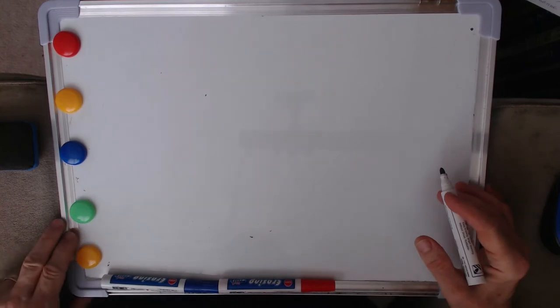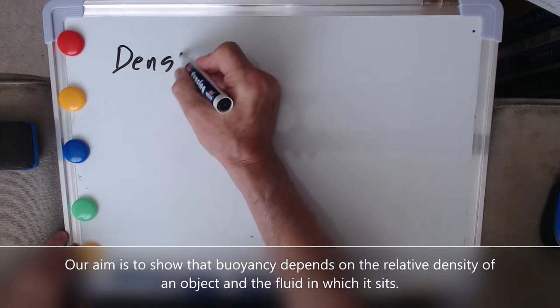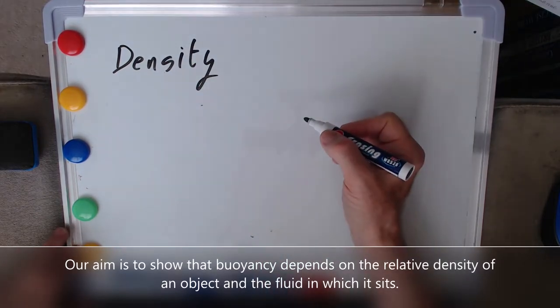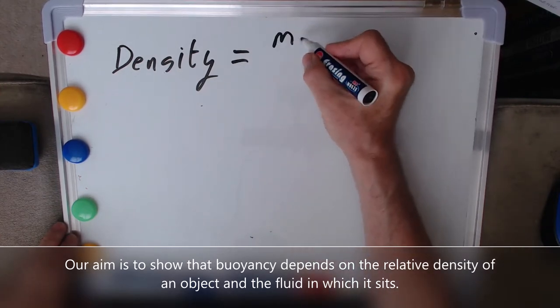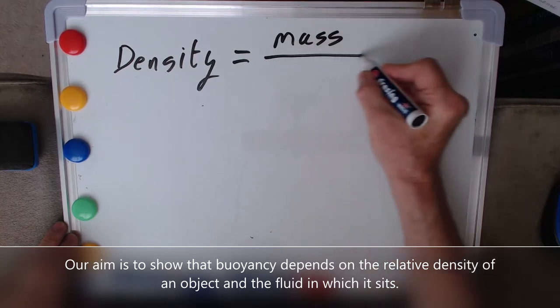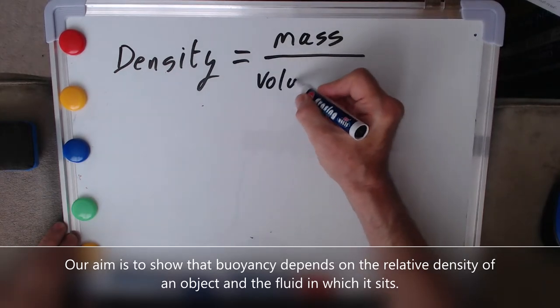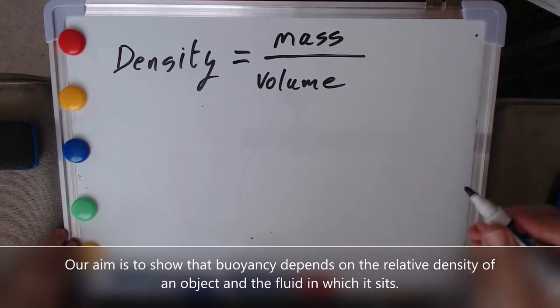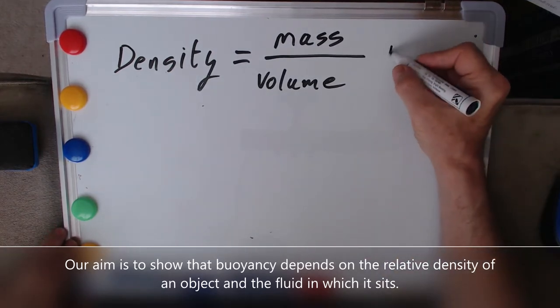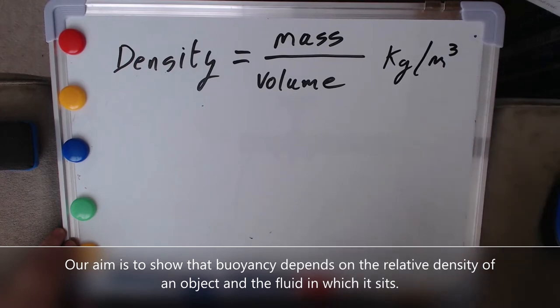Well we need to start with a basic introduction to buoyancy. A key concept for us is defining what we mean by the density of an object and that's relatively straightforward. That's just its mass which we can measure in kilograms divided by its volume which we'll measure in cubic meters. So density has units of kilograms per cubic meter.